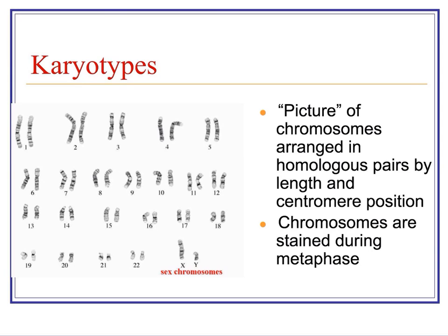Another tool often used by geneticists is karyotypes. A karyotype shows you a picture of the chromosomes. When chromosomes are isolated from a cell, they are all a mishmash of 46 little lines. They are then paired up by looking at their length, the position of the centromere, and their banding patterns. Once paired up, you can look at the number of chromosomes, identify any irregularities, and also determine the sex.